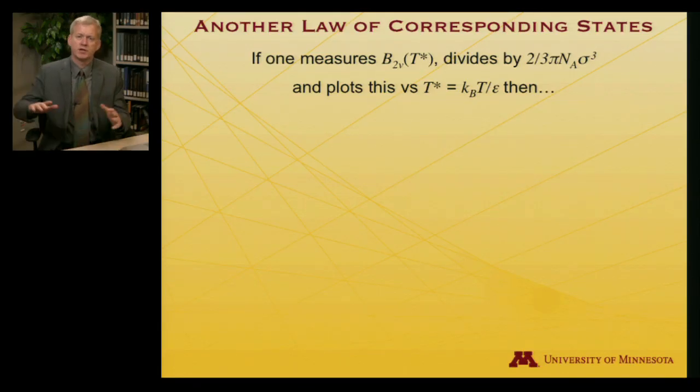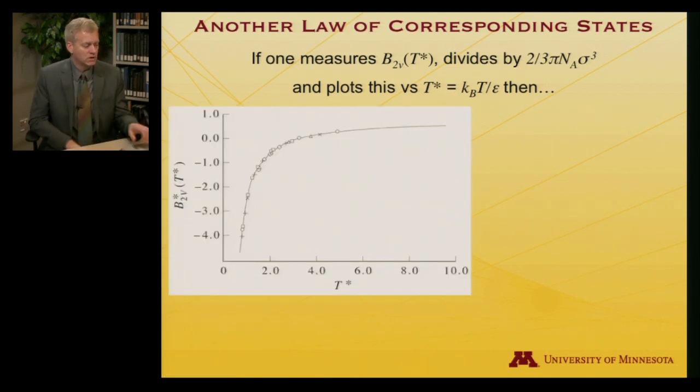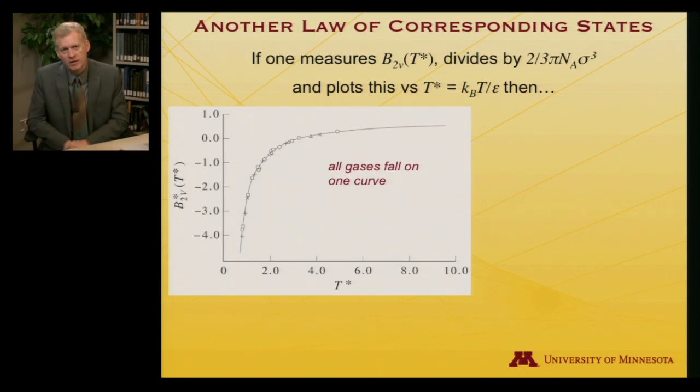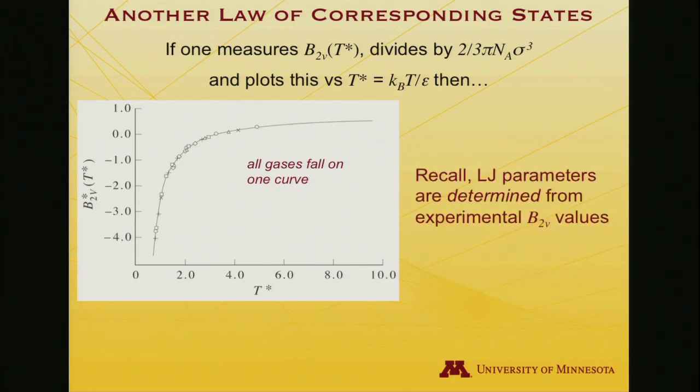Why did I go through this long derivation of what looked like a complicated integral? It gives rise to a pretty interesting additional law of corresponding states. You expect to find corresponding states here because I've built all the molecularity into the reduced variables. I can measure B₂V of T star, do it as a function of t and then look up epsilon and turn all my t's into t stars. And then divide by 2/3 π Nₐ σ³. I will now plot B₂V star against T star. Once again, there are a whole bunch of different symbols, crosses, circles, squares. All gases fall on the same curve.